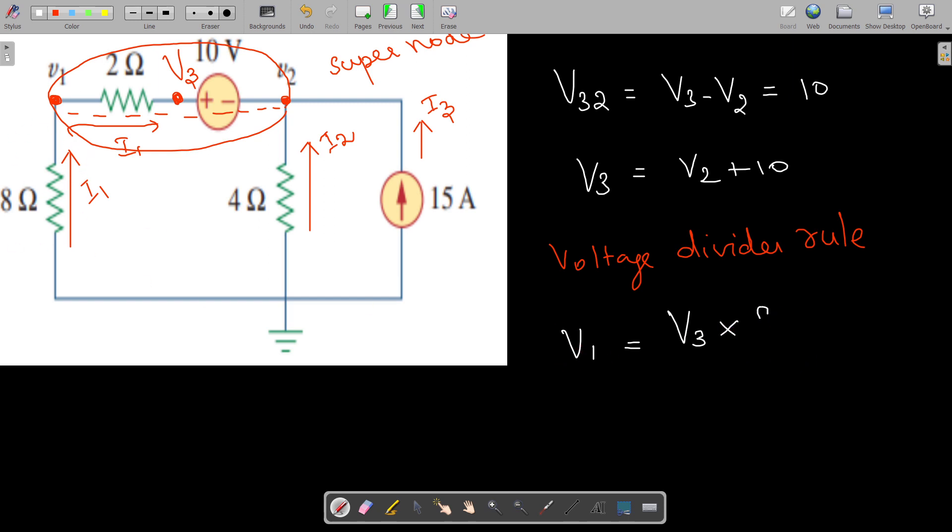So if you divide it by 2, then I can write v1 = 4/5 v3.